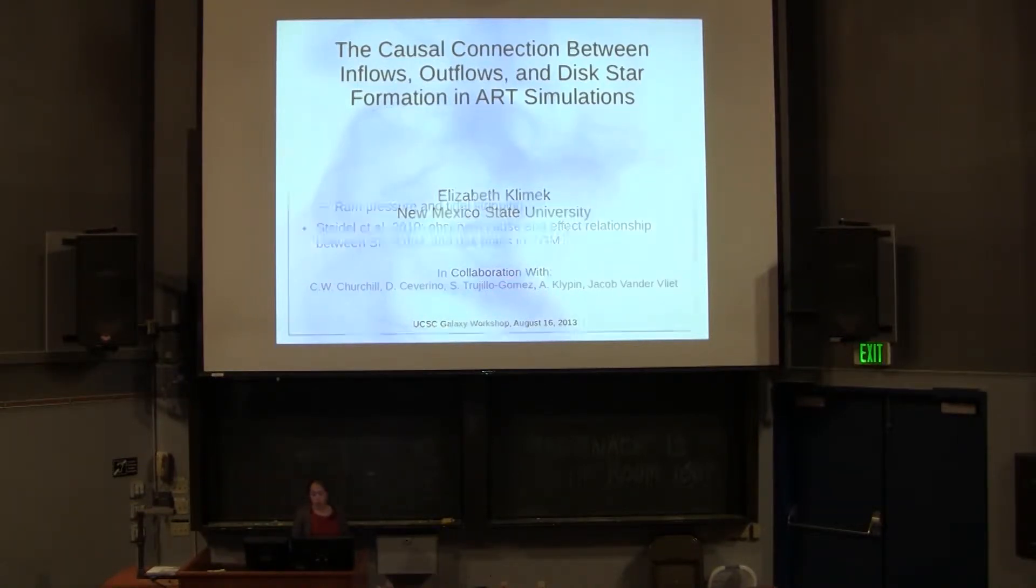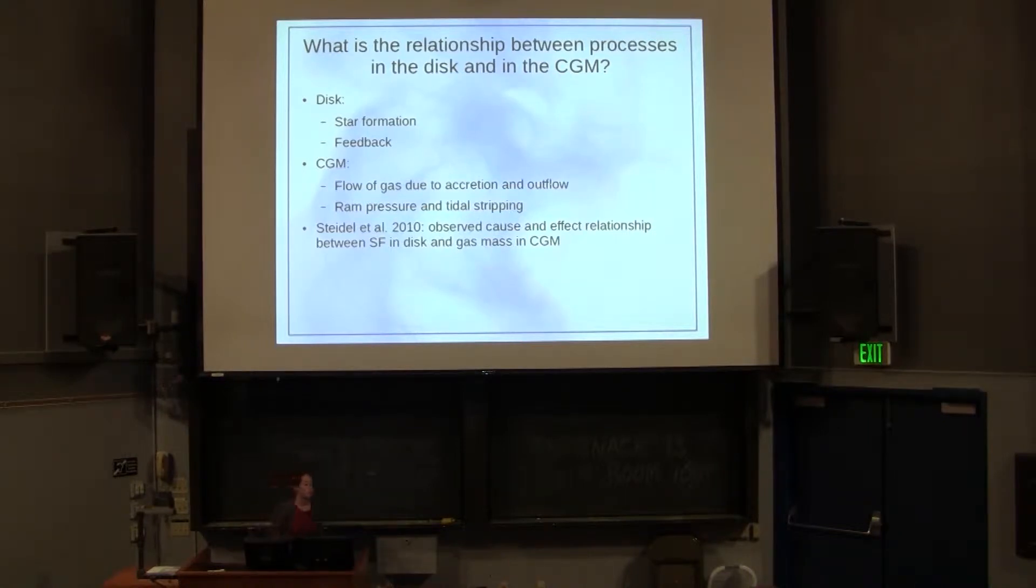So what I'm going to share with you today is basically a status update on a work in progress, very much aimed at addressing this question: what is the relationship between processes in the disk of galaxies and in the CGM? In the disk there are processes such as star formation and feedback, and in the circumgalactic medium there's a lot of traffic, inflow and outflow of gas due to accretion and outflow, ram pressure and tidal stripping.